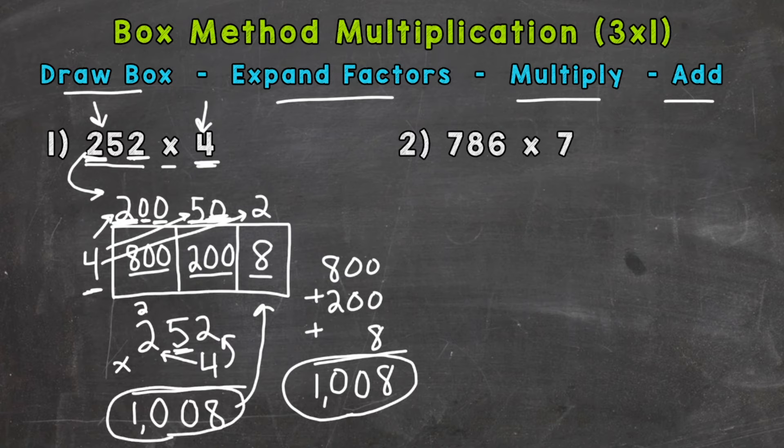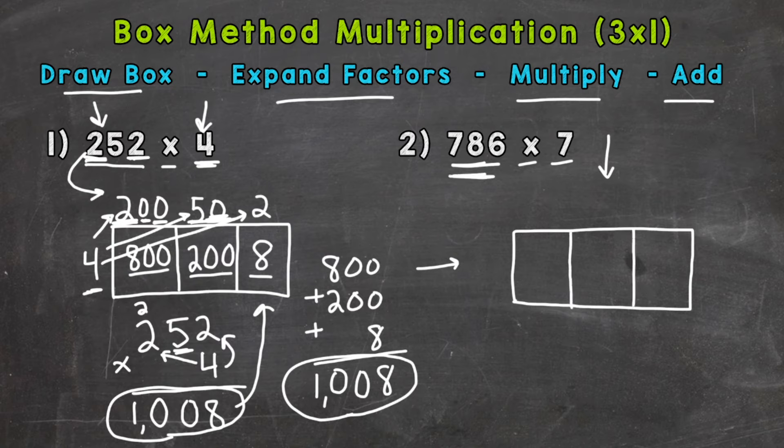So let's move on to number 2, where we have 786 times 7. So the first thing we need to do, we need to draw our box. And it's a 3 by 1 here, so it's not going to be a perfect square, because you need to think. We have 3 digits that are going to be expanded out along the top by just 1 digit along the side. So our top there is going to be longer than the sides. So now we split our box into 3 sections, because we have 3 digits here.